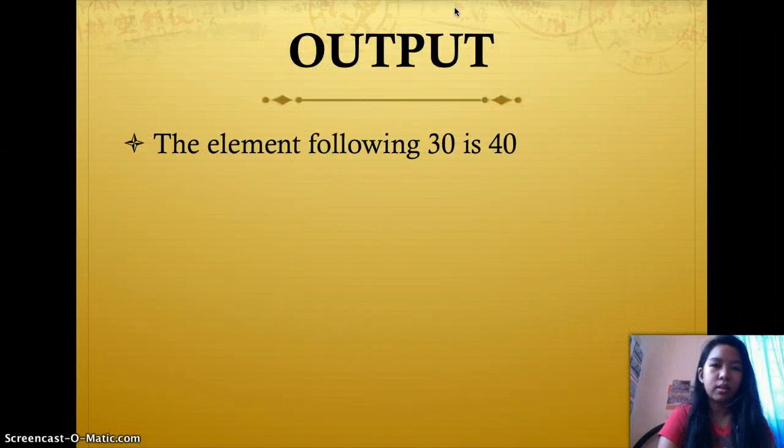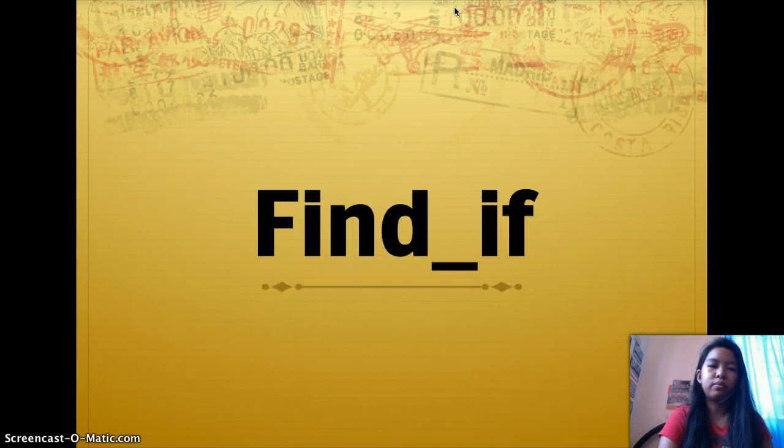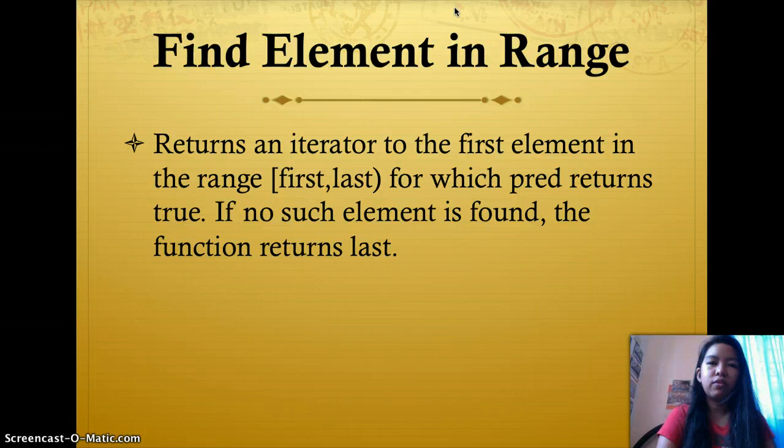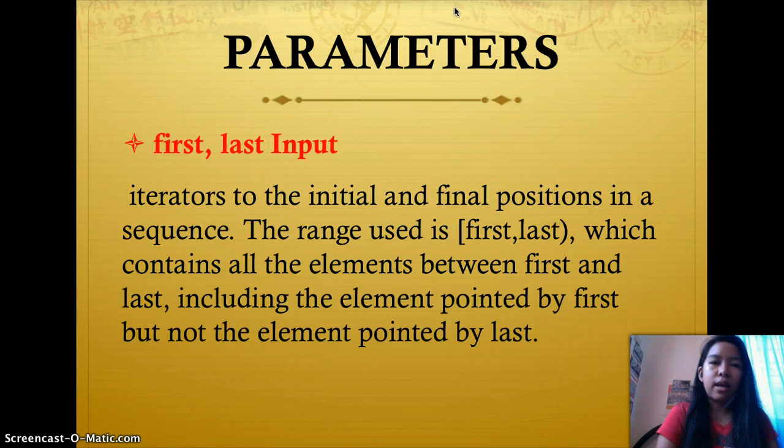Next is find_if. Find element in range. Returns an iterator to the first element in the range [first, last] for which pred returns true. If no such element is found, the function returns last.